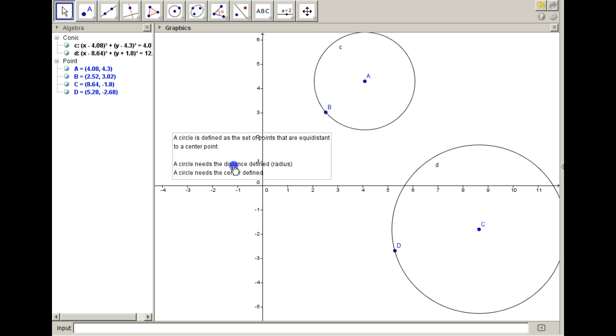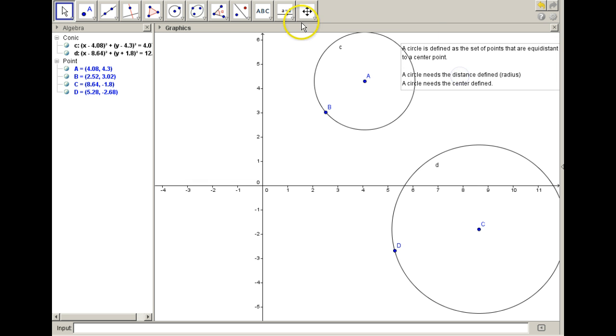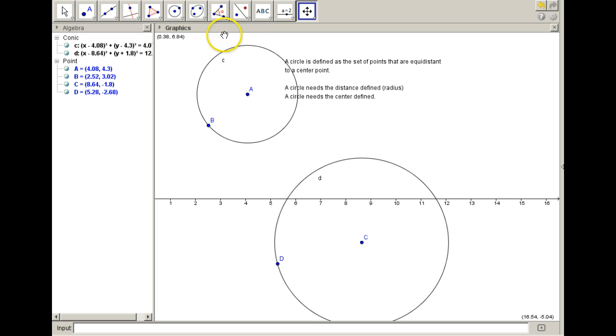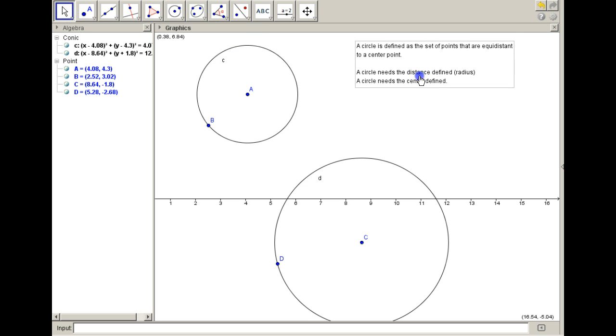By changing its center and changing the distance. So we're going to do that. We're going to change the center and change the distance by using a rigid and a similar transformation.